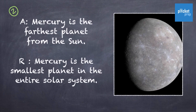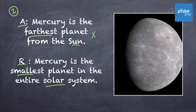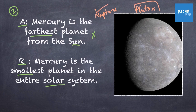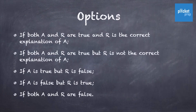Let's solve the second question. The assertion is: Mercury is the farthest planet from the Sun. The reason is: Mercury is the smallest planet in the entire Solar System. We know that the assertion is wrong because Neptune is the farthest planet from the Sun. If you consider Pluto as a planet, then Pluto is the farthest, but excluding Pluto, Neptune is the farthest planet from the Sun. So the assertion is wrong. Mercury is the smallest planet in the entire Solar System, which is true. So the assertion is false and the reason is true — the answer is option D.